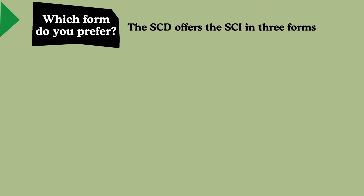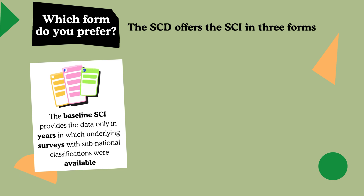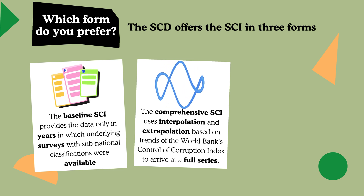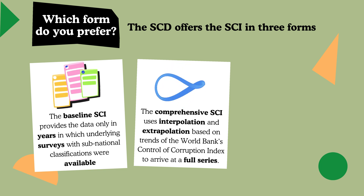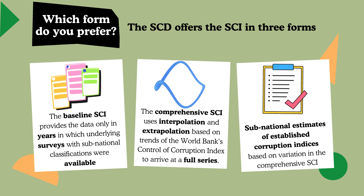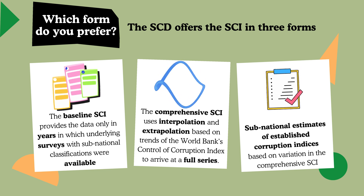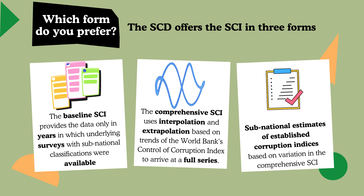Our subnational data are available in three forms. The baseline data, which can be split into petty and grand corruption, are available for all years in which the underlying surveys are available. The comprehensive data use methods of interpolation and extrapolation using trends of external indices to arrive at a full series for each subnational area. Finally, we offer subnational estimates of two established corruption indices: the World Bank's Control of Corruption Index and Transparency International's Corruption Perceptions Index, based on the SCI.